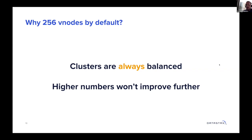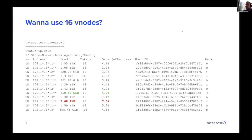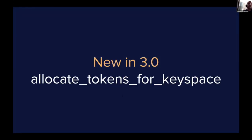So why was 256 picked by default? Because statistically it was the number of vNodes where any cluster of any size was always balanced. If you try to use higher numbers, you didn't get an improvement on balance. If you want to go lower and say use 16 vNodes — here's an extract of a nodetool status output from a customer we got last week — they lowered to 16 vNodes and you have some nodes with 2.6 terabytes of data on disk and others with 700 gigs. That's a pretty massive imbalance.